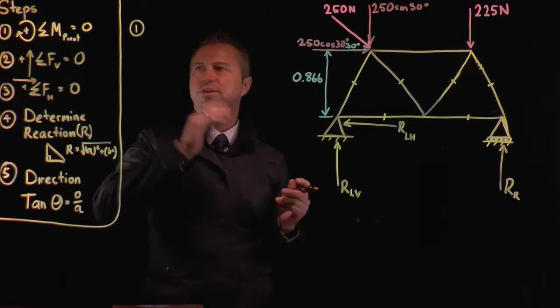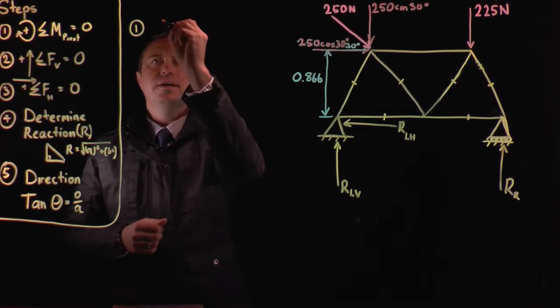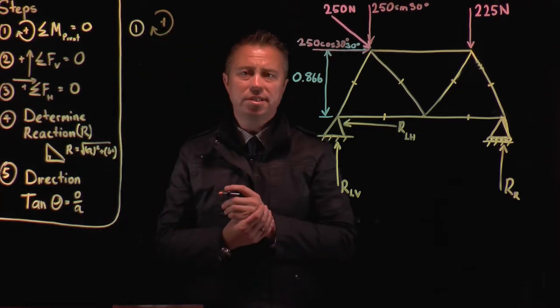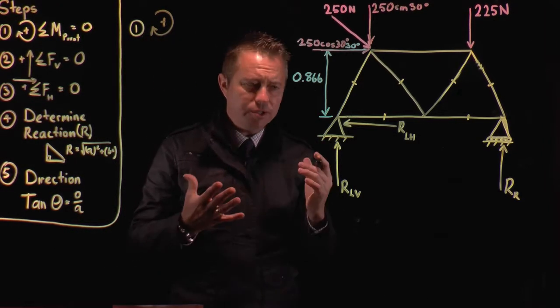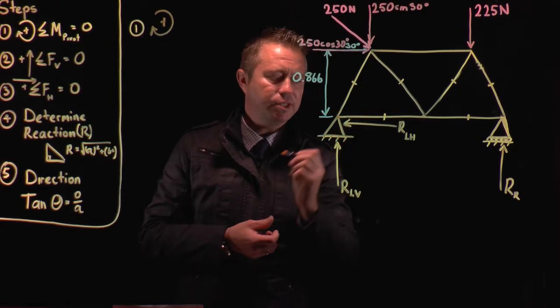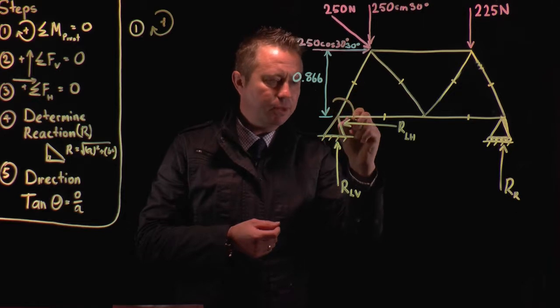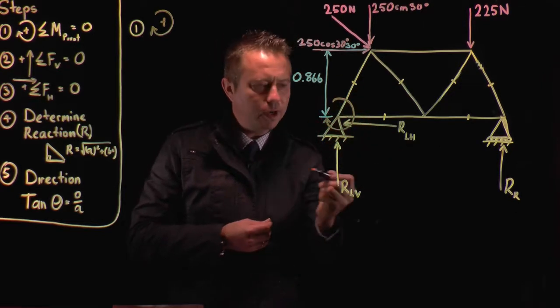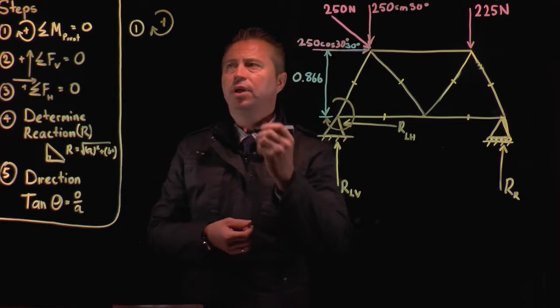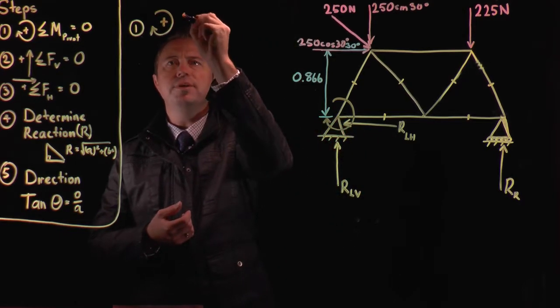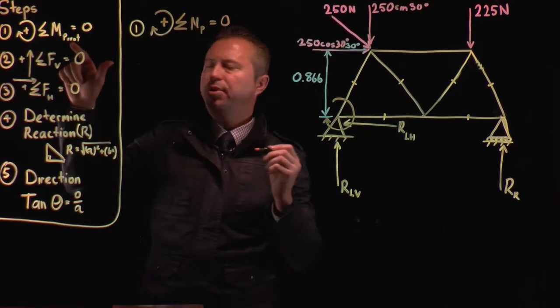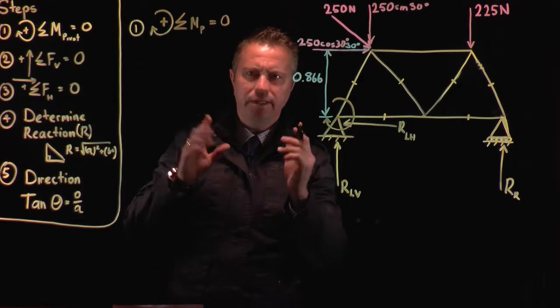We go to step number one. We say that our datum is, everything that's in a clockwise direction is positive. I encourage you always to come down to the pivot joint and put your datum in like so. Therefore everything that goes around that datum and that centre point there is going to be positive. So we say that the sum of the moments about P equals zero. And P here is the pivot joint.